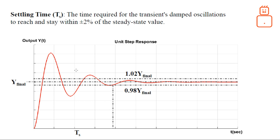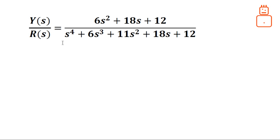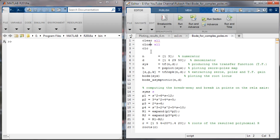We have four time specifications that we need to find given a transfer function using MATLAB. Our example is a fourth-order system, which is very difficult to analyze analytically. We have analytical expressions for first and second order, and can use second-order approximations for third order under some assumptions, but beyond third order we need to use MATLAB and the definitions to find these specific points.